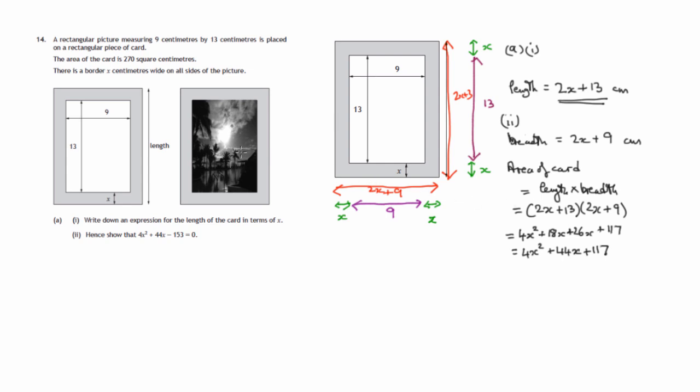Now, if we're told the area of the card is 270 square centimeters, well, this also, what we've found there, is in square centimeters. Since the area of the card is 270 square centimeters, then we can happily say that 4x² + 44x + 117 is equal to 270.